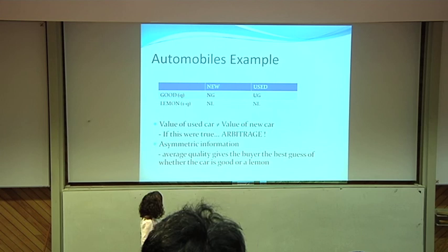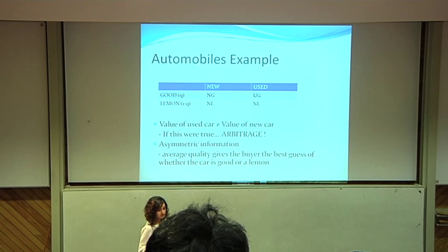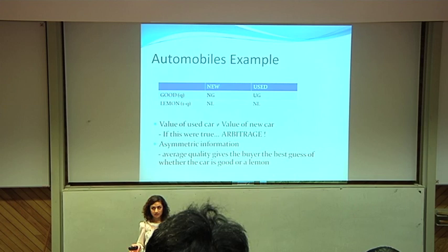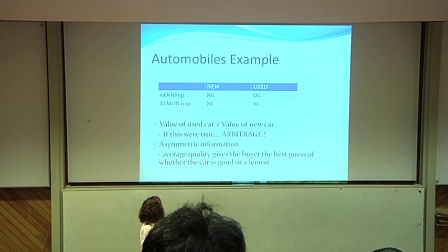Let's move on to the automobiles example now. For simplicity's sake, there are four types of cars: new good cars, used good cars, new lemons, and used lemons. The value of a used car cannot equal the value of a new car, because if this were true, arbitrage would be possible. Arbitrage is where a costless, riskless profit is made — so we could buy a used car in a market for used cars and sell it in the market for new cars, making this costless, riskless profit.